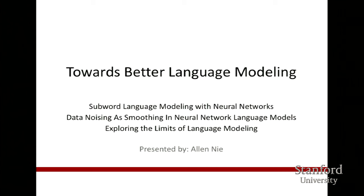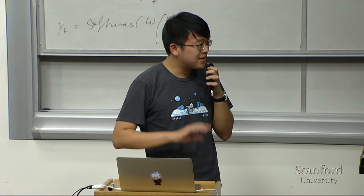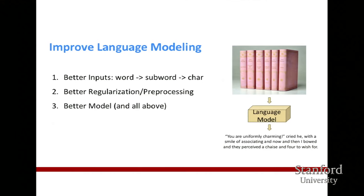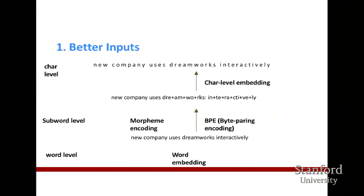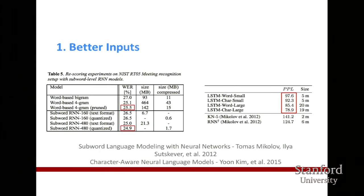Now we'll discuss building towards better language modeling. Language modeling is one of the most canonical tasks in NLP. There are three ways to improve it: better input representation, better regularization or pre-processing, and a better model. For input, instead of word-level representations like GloVe, you can encode words at the subword level — morpheme encoding, byte-pair encoding, or character-level embeddings. This drastically reduces your vocabulary size and makes model prediction easier. Researchers like Mikolov in 2012 and Kim in 2015 explored this route and got better results compared to plain word-based models.